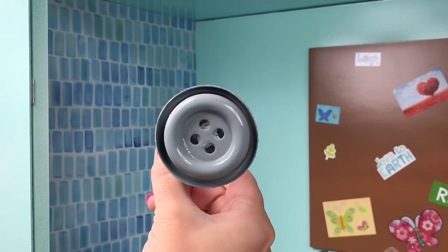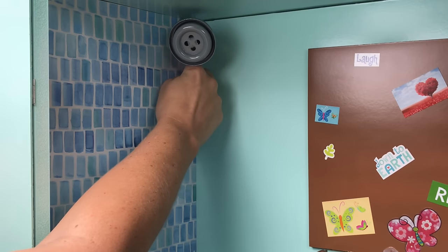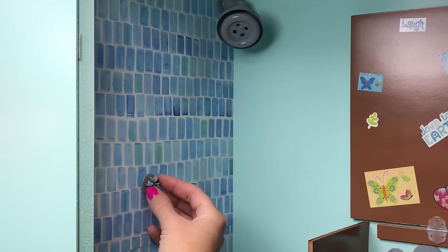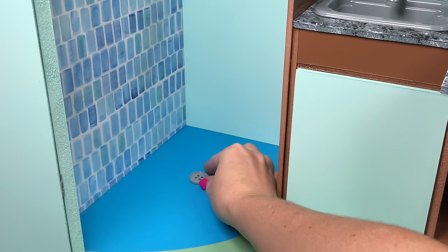Once it's all dry, you can glue it into place. You can place the shower head on the middle of the wall, but I'm going to place it up here in the corner so it gives the dolls more room. And don't forget about the drain!